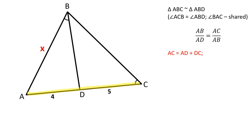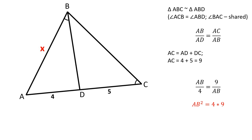AC is equal to 9. Let's sub in our original values. AB over 4 is equal to 9 over AB. Therefore, AB is equal to 6.